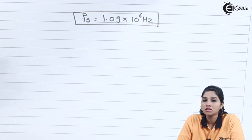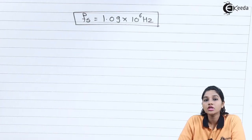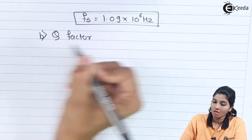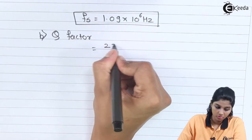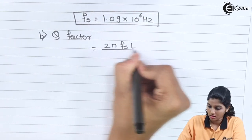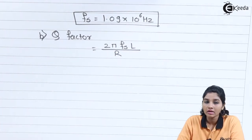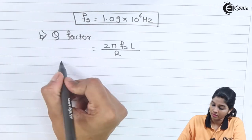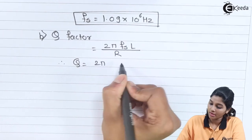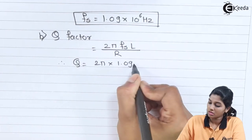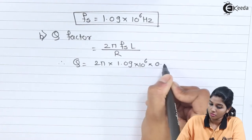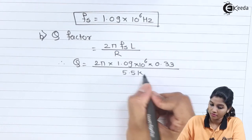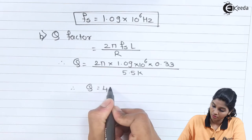Now the second thing we need to find is the Q factor, that is the quality factor. It is given by the formula 2π·Fs·L divided by R. We have already calculated Fs and have values of inductor and resistor. Substituting: Q equals 2π into 1.09 × 10⁶ into 0.33 Henry divided by 5.5 kΩ. We get Q factor as 411.